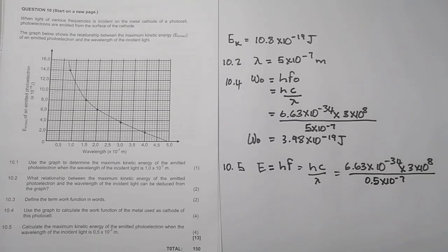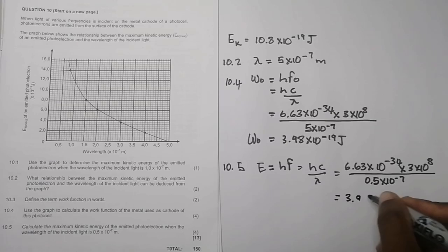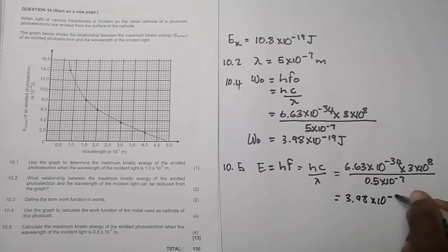So once again, we're going to do almost the same calculation. 6.63 multiplied by 3 exponent 8 to the power 8 divided by 0.5 to the power minus 7. So I get a value which is almost similar, but this time just be careful. So I get a value of 3.98 times 10 to the power minus 18 joules. So this would be the energy of the photon.